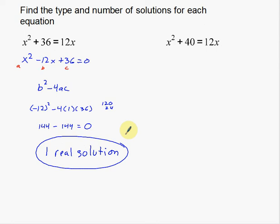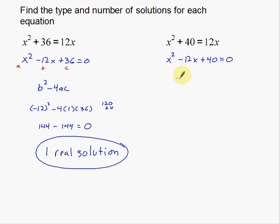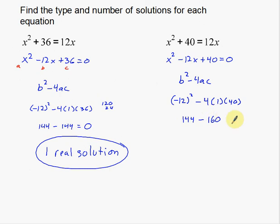This is a really useful process to figure out if you're going to have real solutions or imaginary solutions. For the next example: x squared minus 12x plus 40 equals 0. It's very similar to the first one, but notice it has 40 instead of 36. My discriminant is b squared minus 4ac: negative 12 squared minus 4 times 1 times 40. That's 144 minus 160, which gives me negative 16.